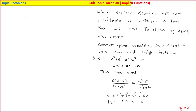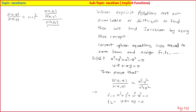So f1 = x² + y² + u² − v² and f2 = uv + xy. Now the required Jacobian, that is ∂(u,v)/∂(x,y), its formula is (−1)² times the numerator Jacobian ∂(f1,f2)/∂(x,y) divided by the denominator Jacobian ∂(f1,f2)/∂(u,v). Here we have two variables u, v with respect to two variables x, y, so it is (−1)².